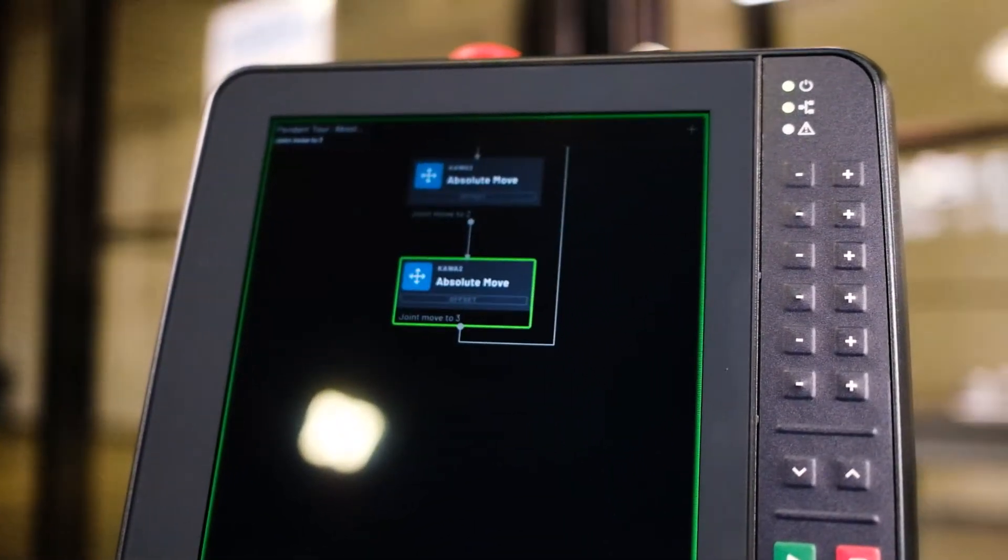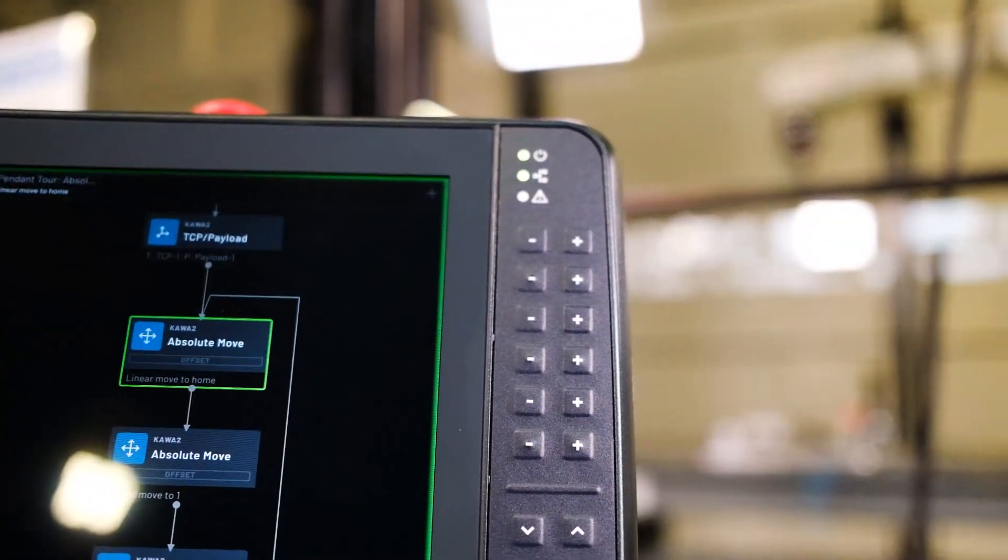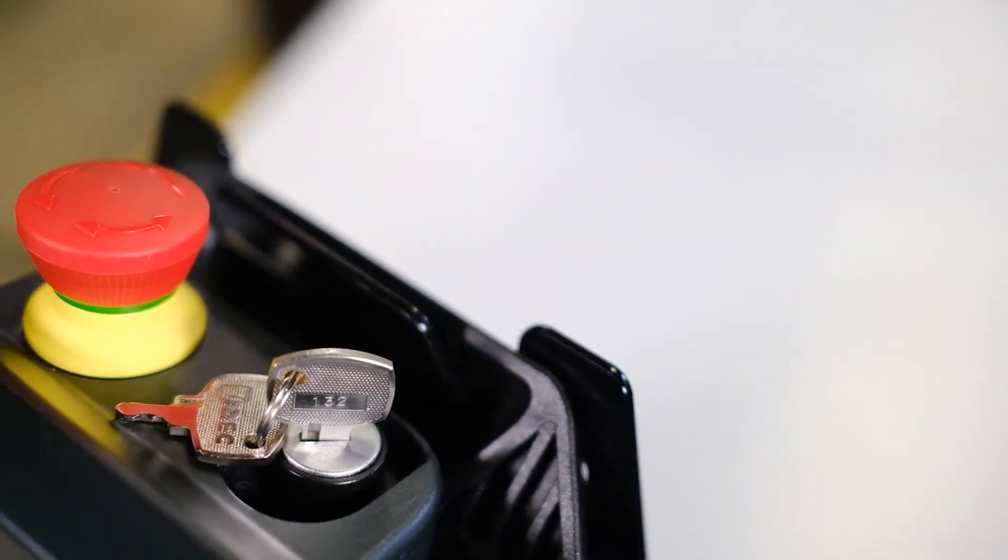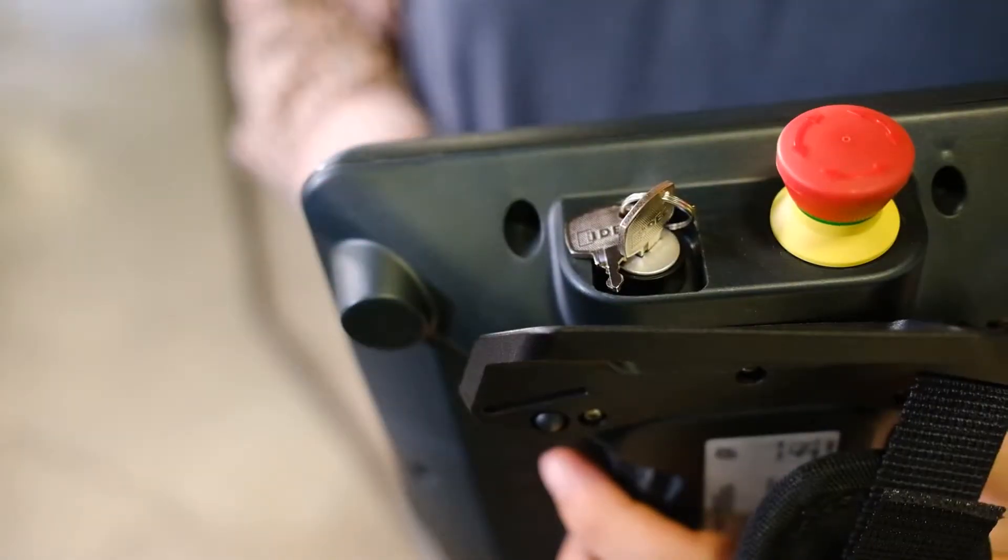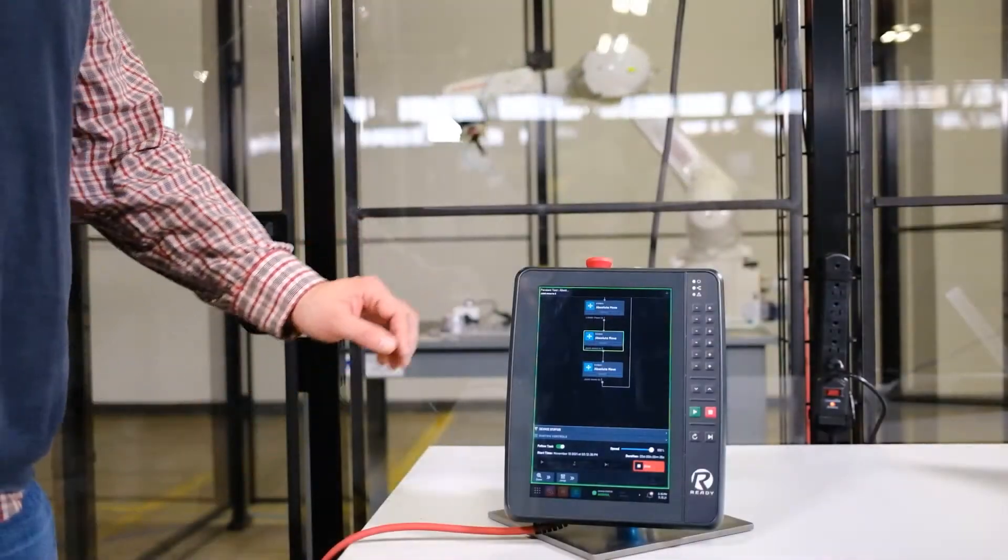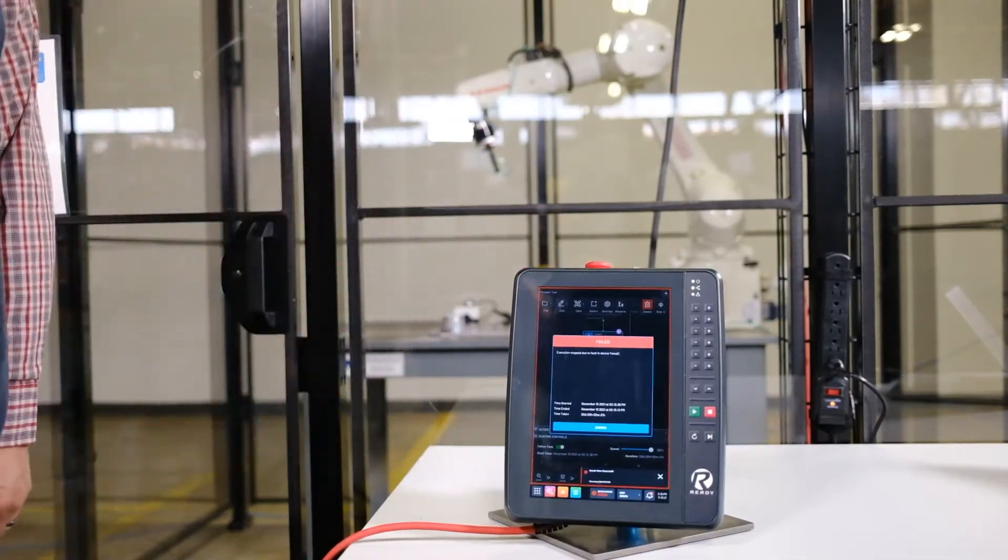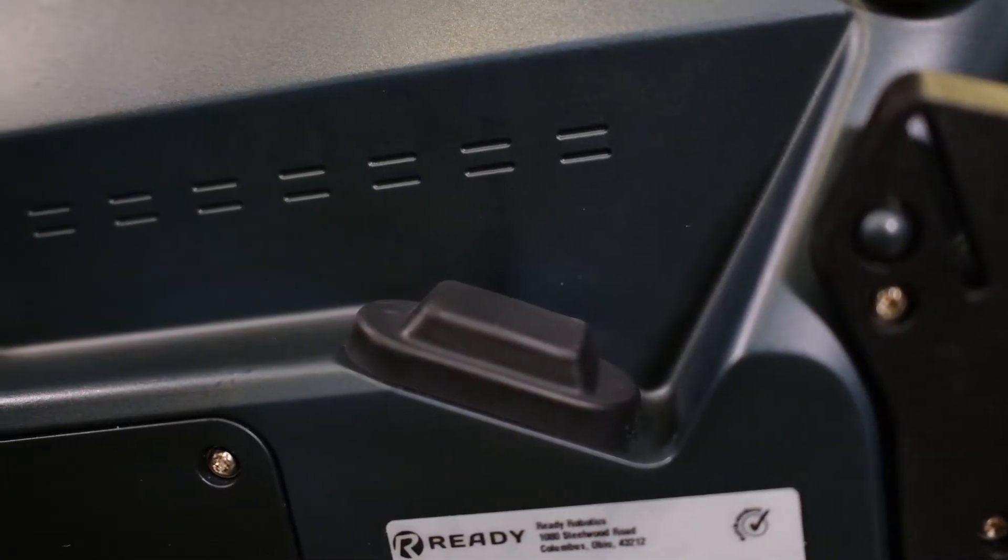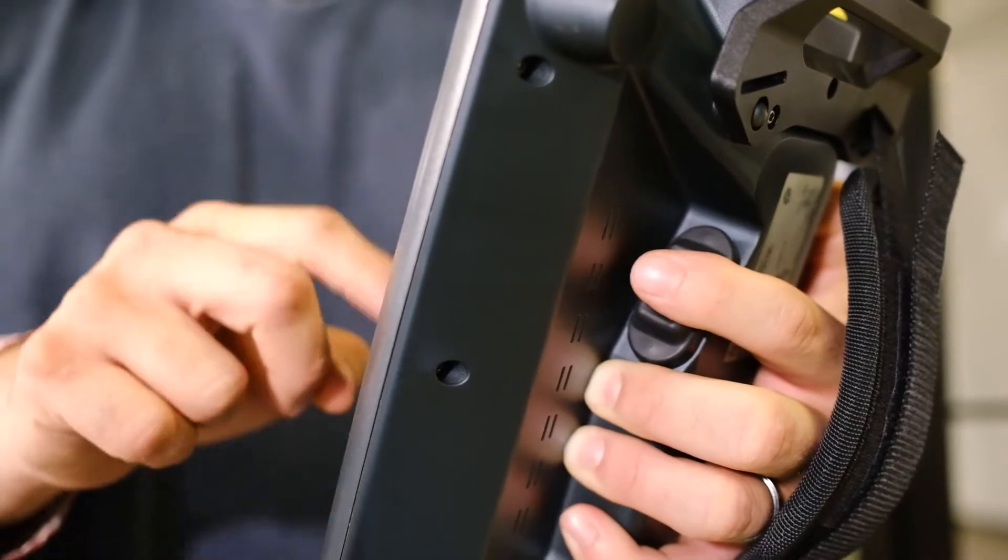The Teach Pendant also features standard safety devices for programming industrial automation. There's a key switch for changing between operating modes, an emergency stop button for emergency situations, and a three-position enabling device for moving the robot around manually.